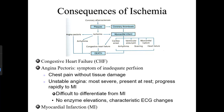Consequences of ischemia can lead to congestive heart failure or angina pectoris, which involves symptoms of inadequate perfusion — chest pain without tissue damage. Unstable angina is the most severe form, present at rest and progresses rapidly to myocardial infarction. It is difficult to differentiate from MI, but there are no enzyme elevations or characteristic ECG changes.